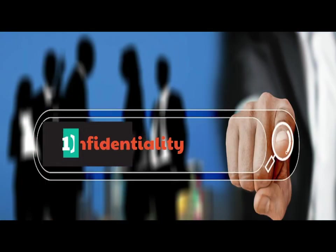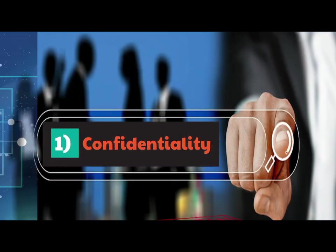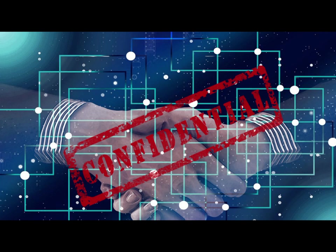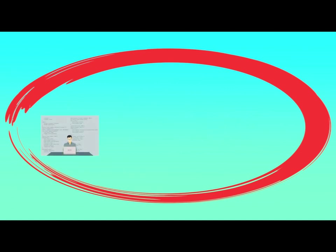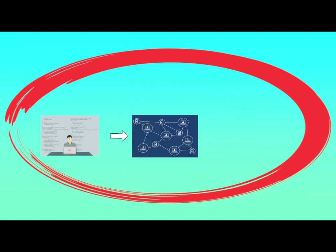The first security principle is Confidentiality. It ensures that the necessary level of secrecy is enforced at each junction of data processing and prevents unauthorized disclosure. This level of confidentiality should prevail while data resides on systems and devices within the network, as it is transmitted, and once it reaches its destination.